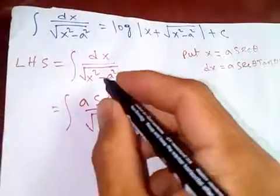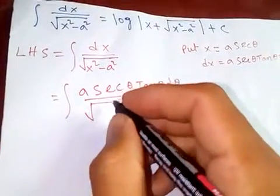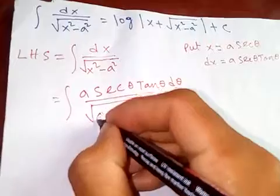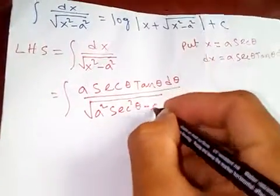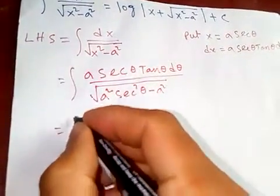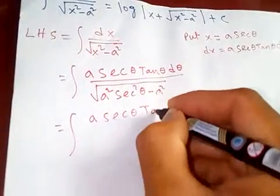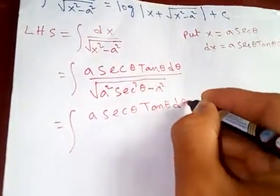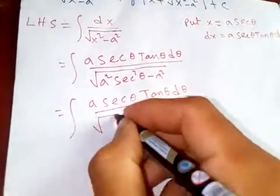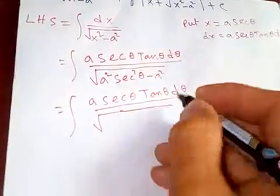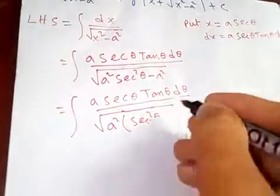We can take the square root. x is a sec θ, so x squared will be a squared sec squared θ minus a squared. From the square root, I can take a squared out, so I can take the square root of a squared out.